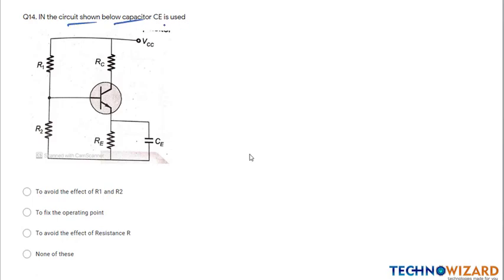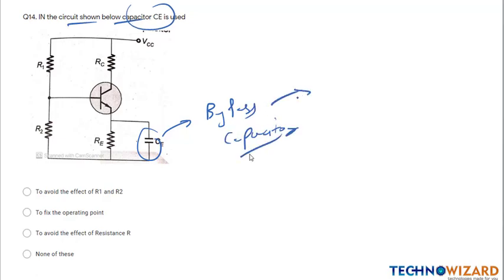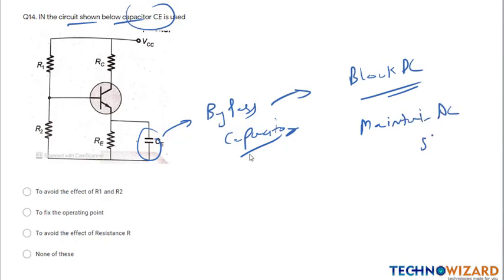Question number fourteen: in the circuit below, the capacitor acts as an emitter bypass capacitor. Its function is to block DC and maintain AC stability. If stability is maintained, then the operating point or Q-point will be fixed. Therefore option B is the correct answer.